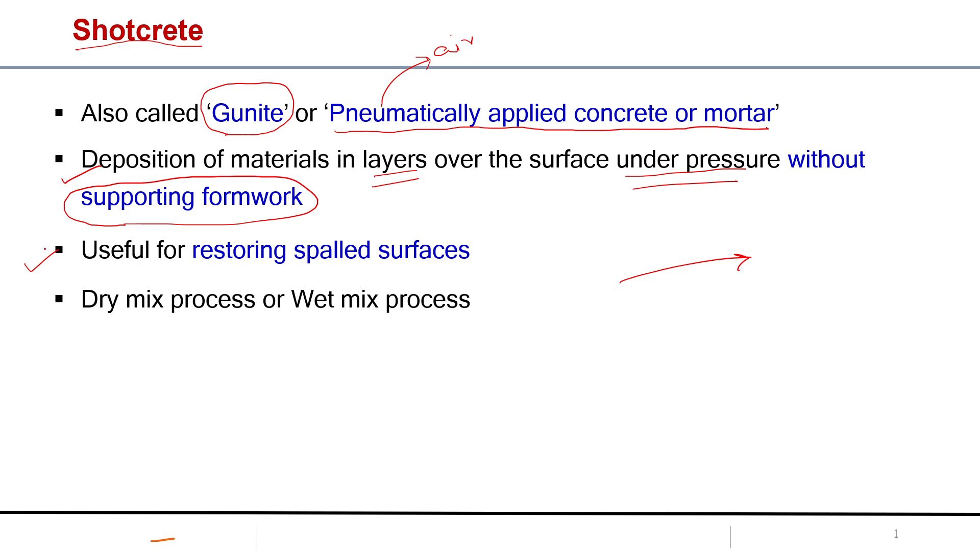One of the applications is we need to restore the spalled surfaces. Spalled surfaces means when the concrete is spalled out, aggregates come out, reinforcement is exposed. In those cases you can use this method.